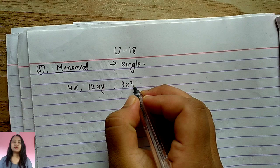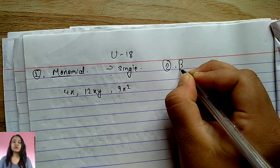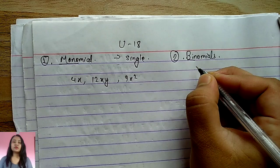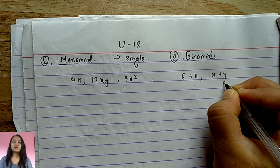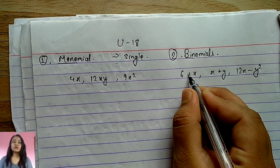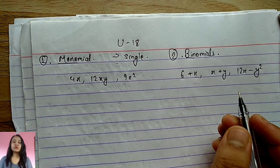Next is the binomial. 'Bi' means two, so a binomial expression is a mathematical expression that has exactly two terms, like 6 + x, or x + y, or 12x − y². There is only a plus or minus sign connecting the two different terms.